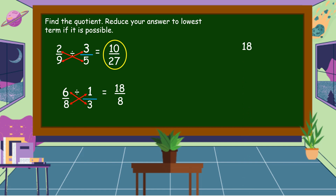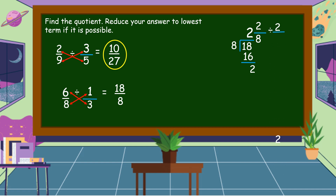Ang gagawin natin ay divide the numerator by the denominator. Eighteen divided by eight is equal to two. Two times eight is equal to sixteen. Eighteen minus sixteen is equal to two. Itong two na remainder natin, gagawin natin itong numerator. Tapos, ang divisor natin na eight, gagawin natin denominator. Tapos, i-evaluate natin ang ating fraction. Two-eighths. May common factor pa ba ang two and eight? Tama — both numerator and denominator are divisible by two.